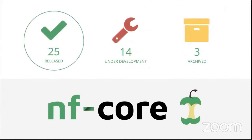We currently have 25 pipelines with a release, which means they're effectively stable. 14 pipelines are under development with no active release yet, but that doesn't mean they're not usable. And then there are three older pipelines which have been archived. Unlike some other bioinformatics listing services, we don't want to just collect as many pipelines as possible — quite the opposite. We want a curated, single minimal set: one pipeline per data type. So one RNA-seq pipeline, not 20 to choose from. That pipeline can have lots of different options and be configurable, but we want a single clear recommendation for each type of data.